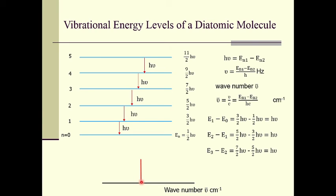This is the key difference between the rotational and vibrational spectrum of a diatomic molecule. In the case of rotational energy levels we see several equally spaced lines in the rotational spectrum, but in the case of vibrational energy levels we get only a single line in the vibrational spectrum.